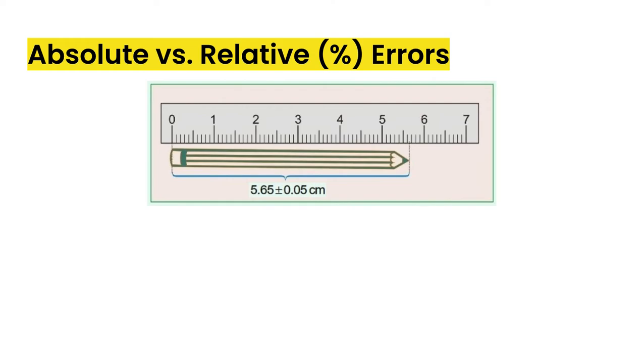So now in terms of errors, we also have something called absolute versus relative percentage errors. And so if we take a look at this pencil measurement here, it's measuring 5.65. So we can measure the 5.6 accurately. And then we're guessing the 0.05 on there.